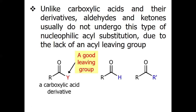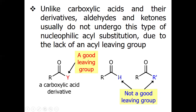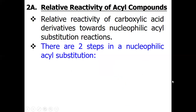You can see here that in carboxylic acid or its derivatives, there is a good leaving group, while when we compare with aldehydes or ketones, the H or alkyl group is not a good leaving group. So generally, the relative reactivity of carboxylic acid derivatives towards nucleophilic acyl substitution depends on two steps: addition of the nucleophile to the carbonyl group, and elimination of the leaving group via the tetrahedral intermediate.